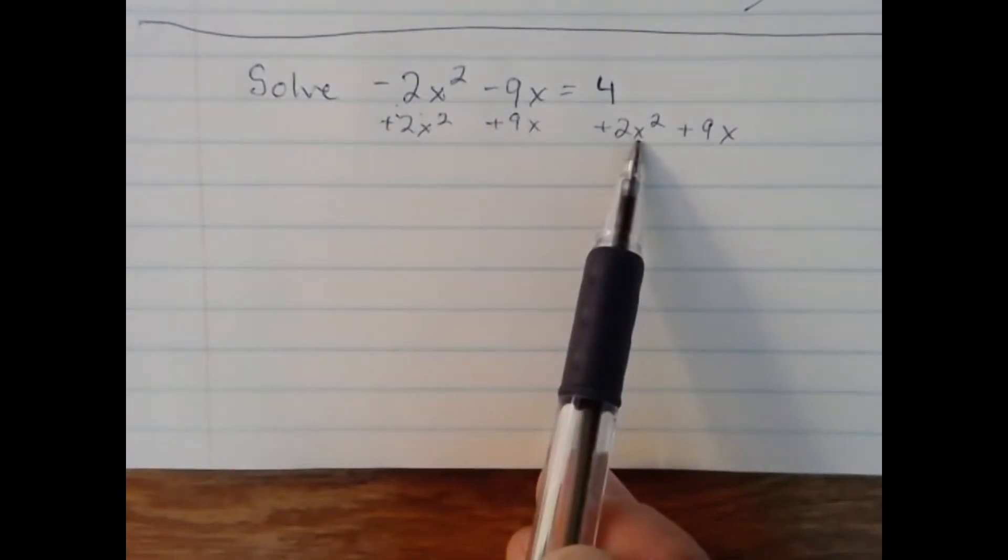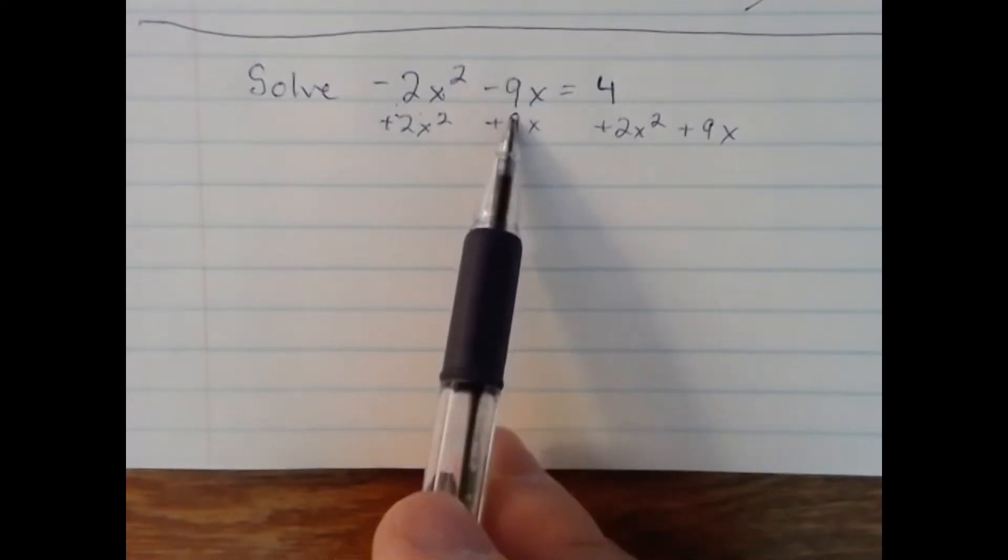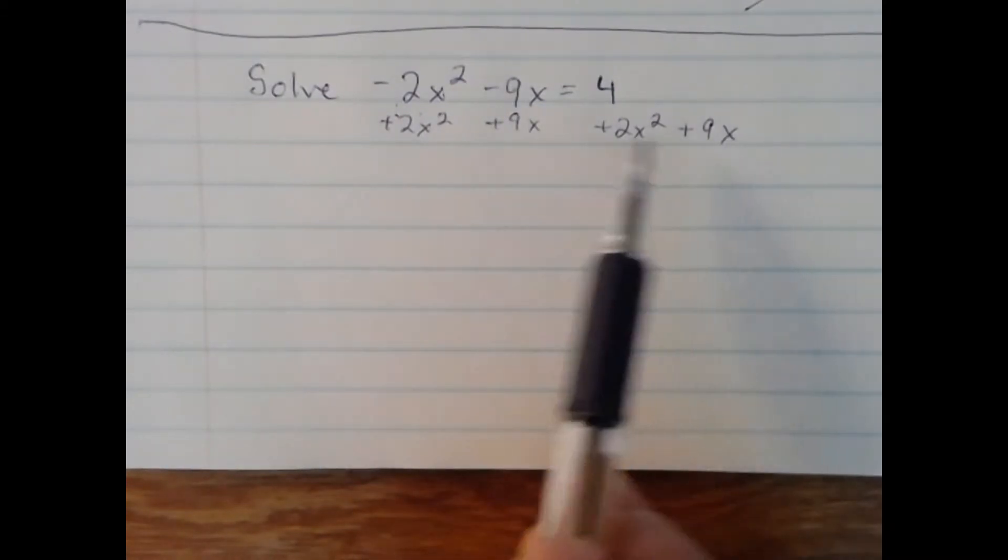Plus 2x² here, plus 2x² here. I also need to bring that -9 with it, so I'm going to add 9x on both sides as well.